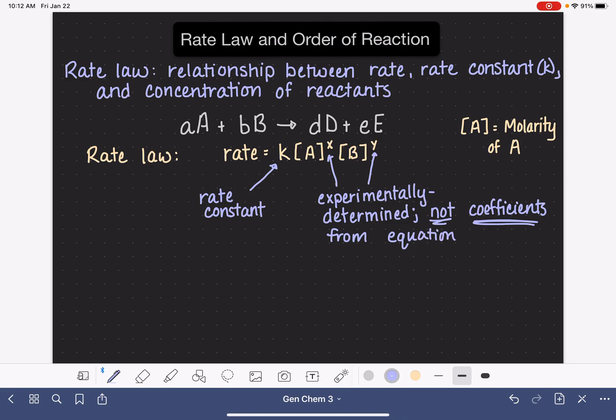The exponents, x and y, and if we had another term out here, like if there was a third reactant, we would say that that had a power of z. These exponents are used to determine what we call the order of the reaction. The order of the reaction is just simply the sum of these exponents in the rate law.